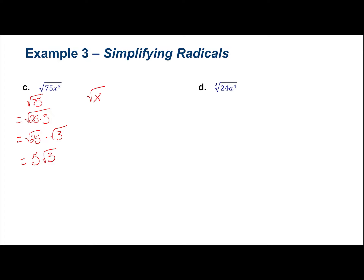Now simplify the square root of x cubed. Remember, the square root has an index of 2. How many times does 2 go into 3? One time — so bring out 1x outside the radical. Dividing 3 by 2 goes in once with 1 left over, so x to the 1st remains inside. Combining both parts: 5x on the outside and radical 3x on the inside gives a final answer of 5x radical 3x.